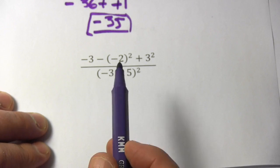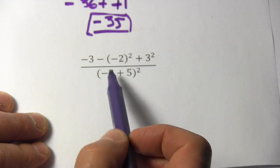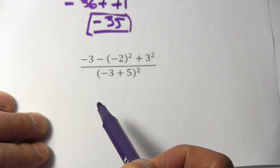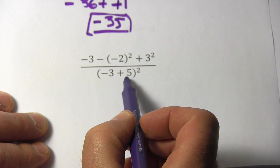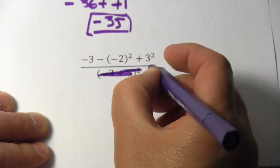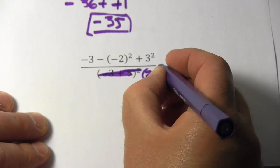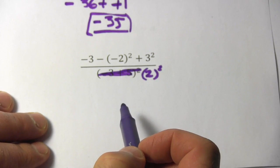So the first thing is to resolve what's inside parentheses. I've got this set of parentheses on top, and it's just a negative 2 inside, there's nothing to do with that, so nothing to resolve, I'll just leave that. On the bottom here I've got negative 3 plus 5, well that's just 2, so I'm going to actually replace that with 2 and then put the exponent back on there. Alright, so we resolve the parentheses,